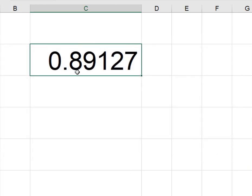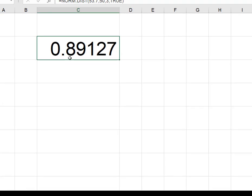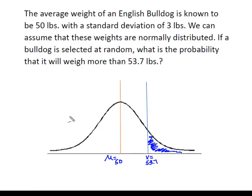And so it's going to give me the probability as 0.89127. So now I'm back over here at my problem and we knew that we were solving for this area up here above 53.7.